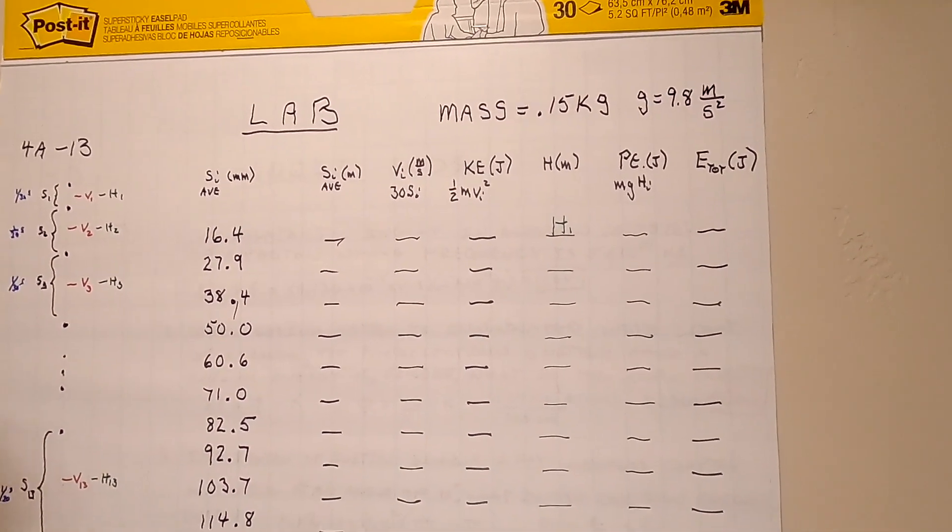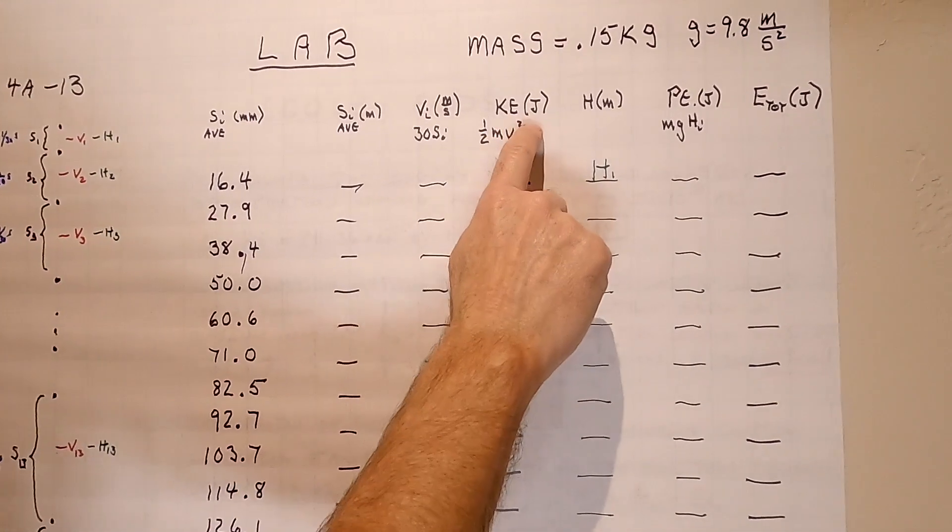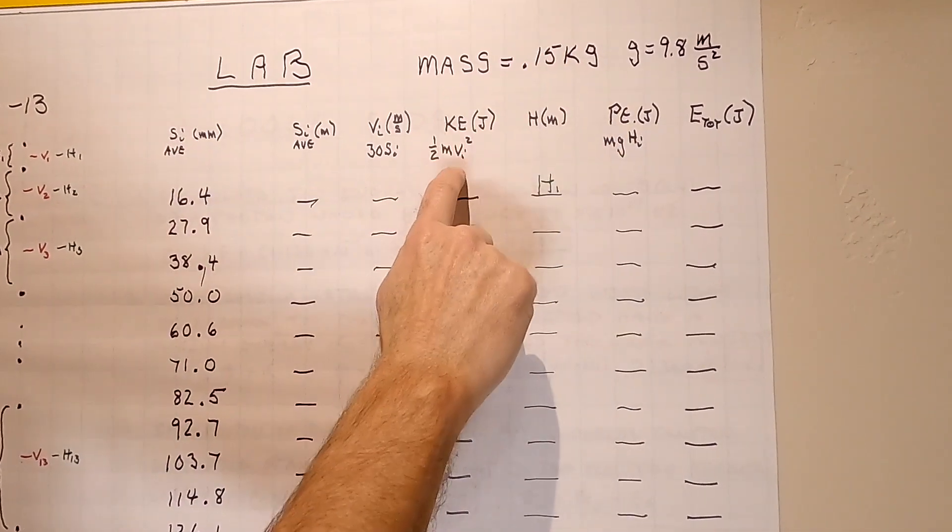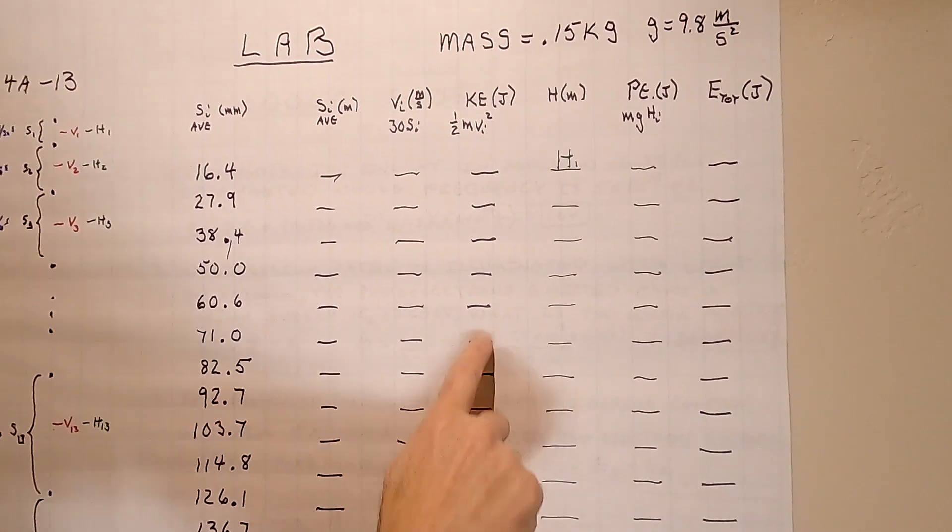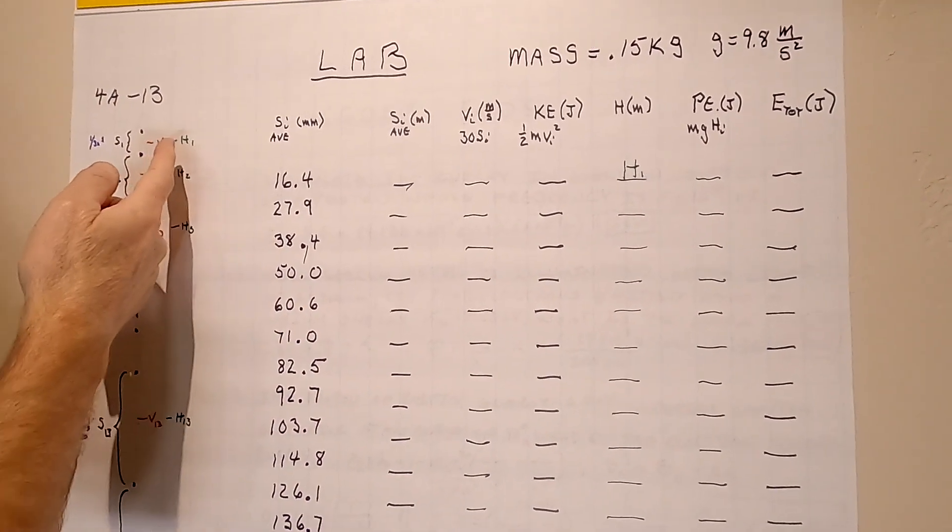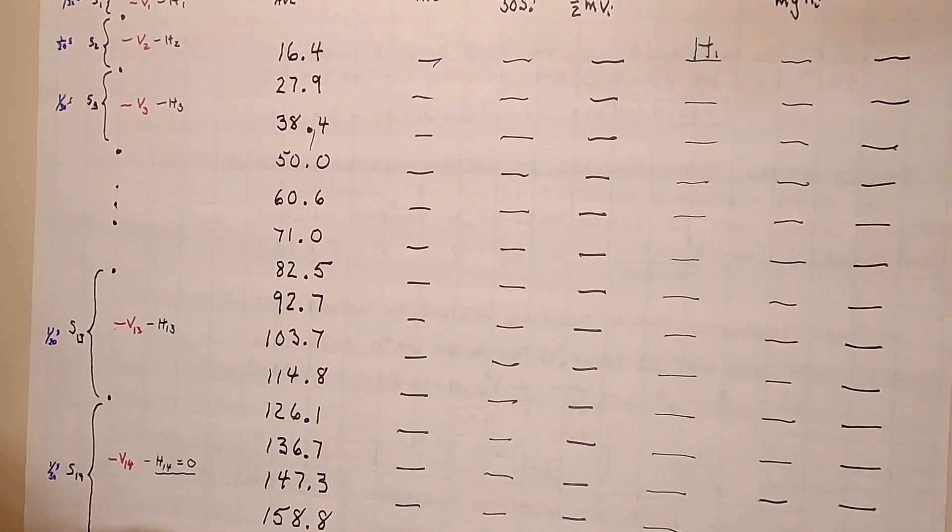Now since I know the speed, I can square this, this column, multiply it by that mass, and I can have a whole column of kinetic energies right here. So you notice it's going to be very small right here. It's going to get bigger and bigger because we know the speed is getting larger and larger.